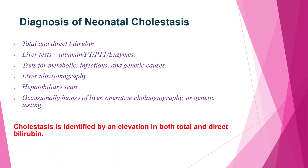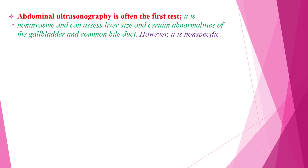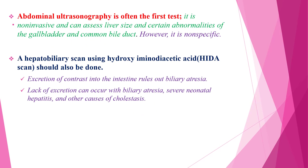Cholestasis is identified by elevation in both total and direct bilirubin, but the direct bilirubin should be more than 1 mg/dL to diagnose cholestasis. Abdominal ultrasonography is often the first imaging test done; it is non-invasive and assesses liver size and certain abnormalities of the gallbladder and common bile ducts, however it is not specific. A hepatobiliary scan using a HIDA scan should also be done. If there is excretion of contrast into the intestine, it rules out biliary atresia. If there is lack of excretion, it can occur with biliary atresia, severe neonatal hepatitis, and other causes of cholestasis.